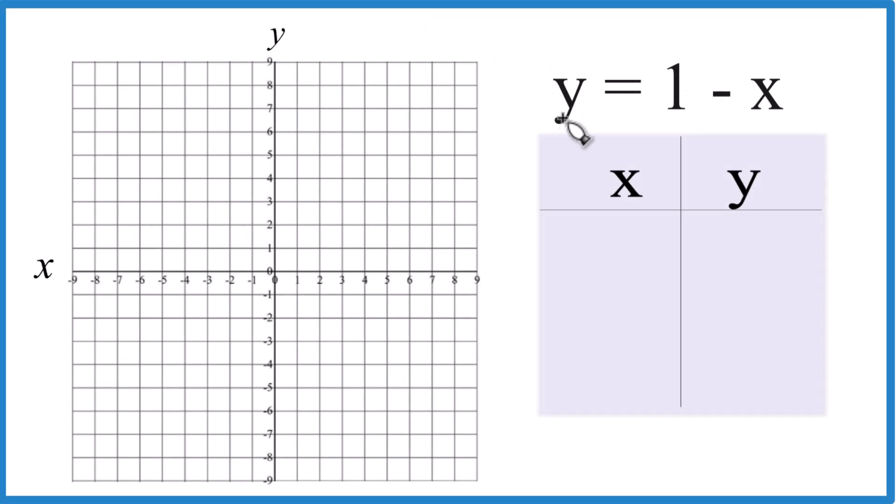So let's graph the equation y equals one minus x. We'll use a table of values first, then we'll do slope-intercept form quickly afterwards.